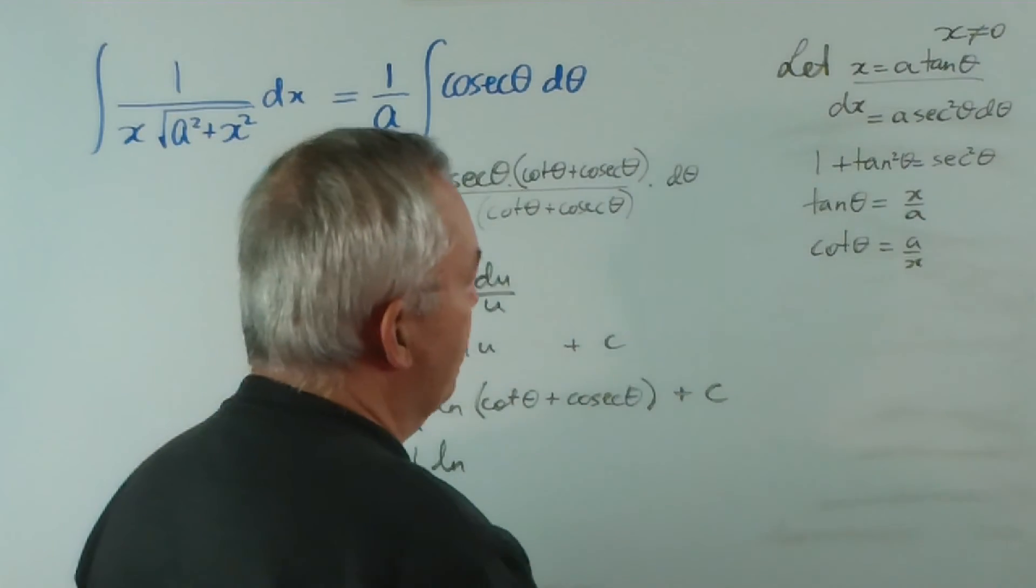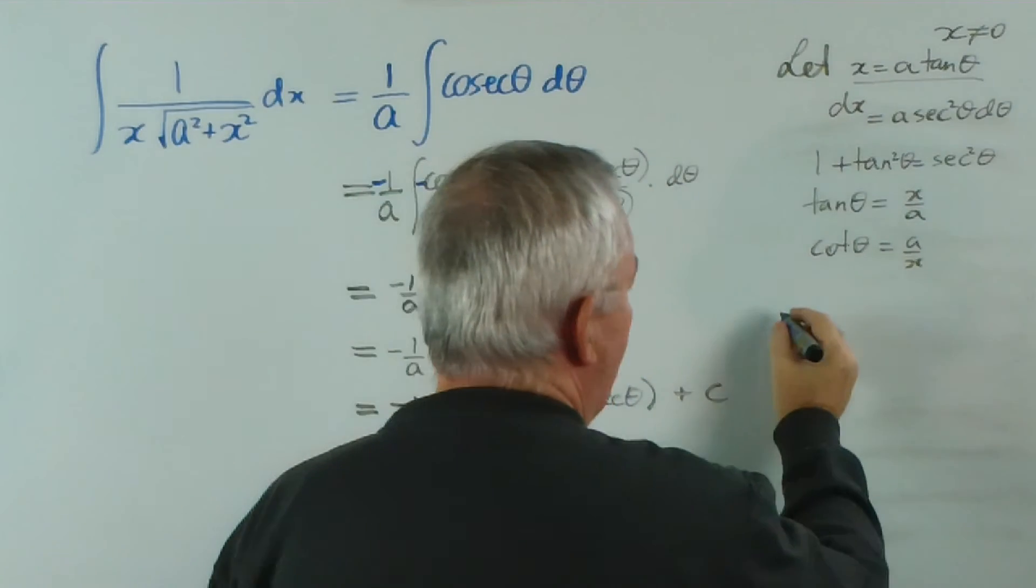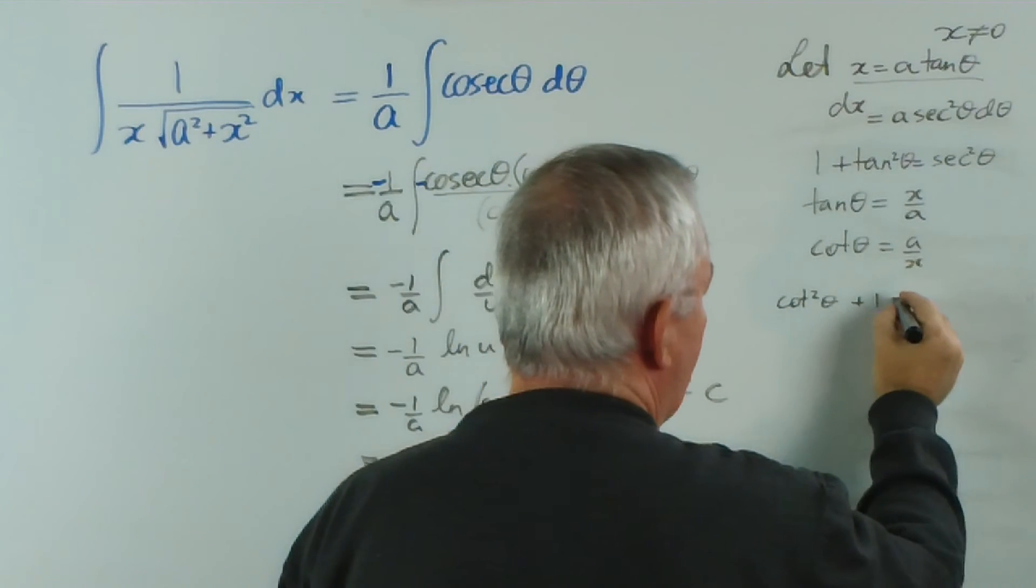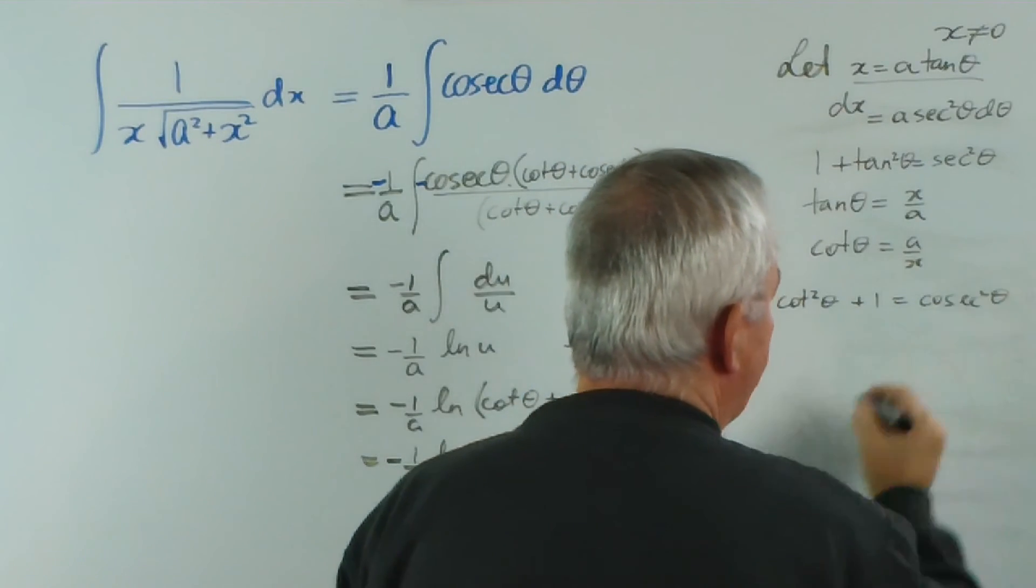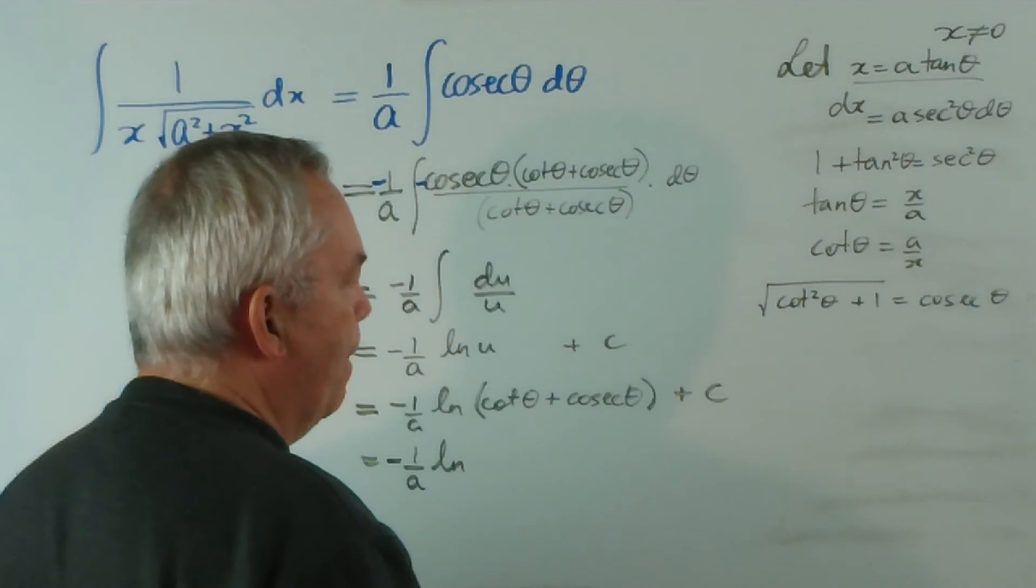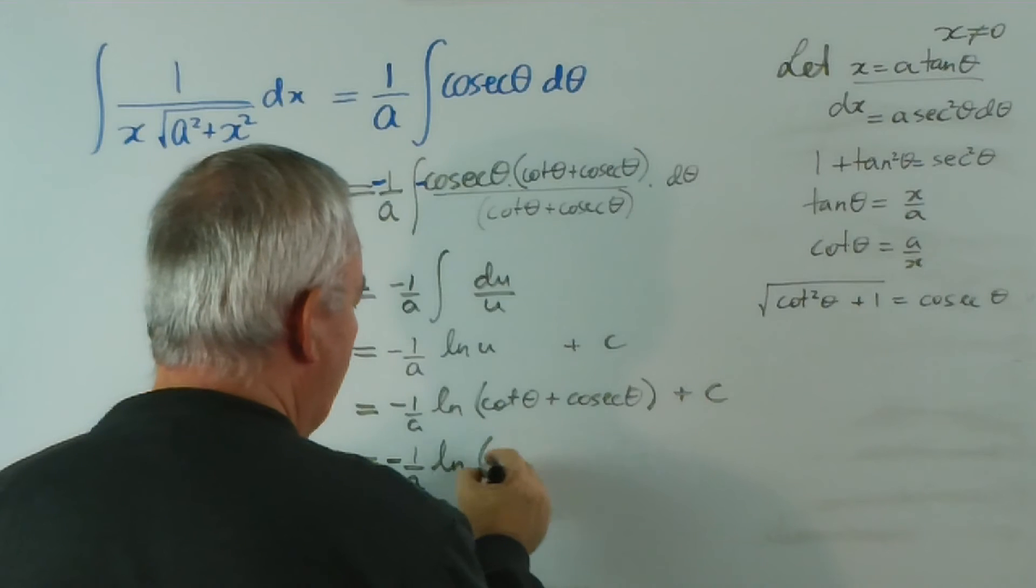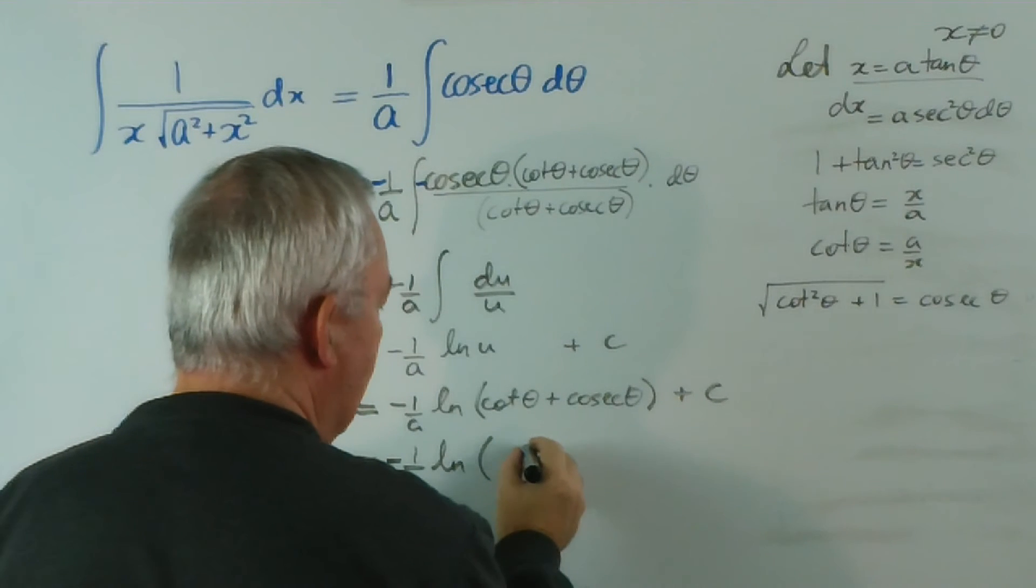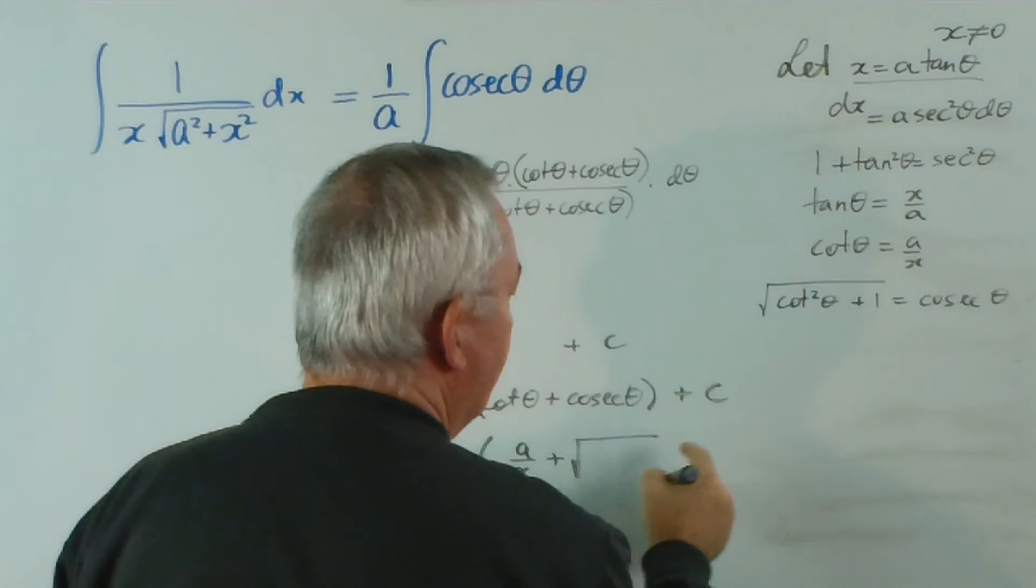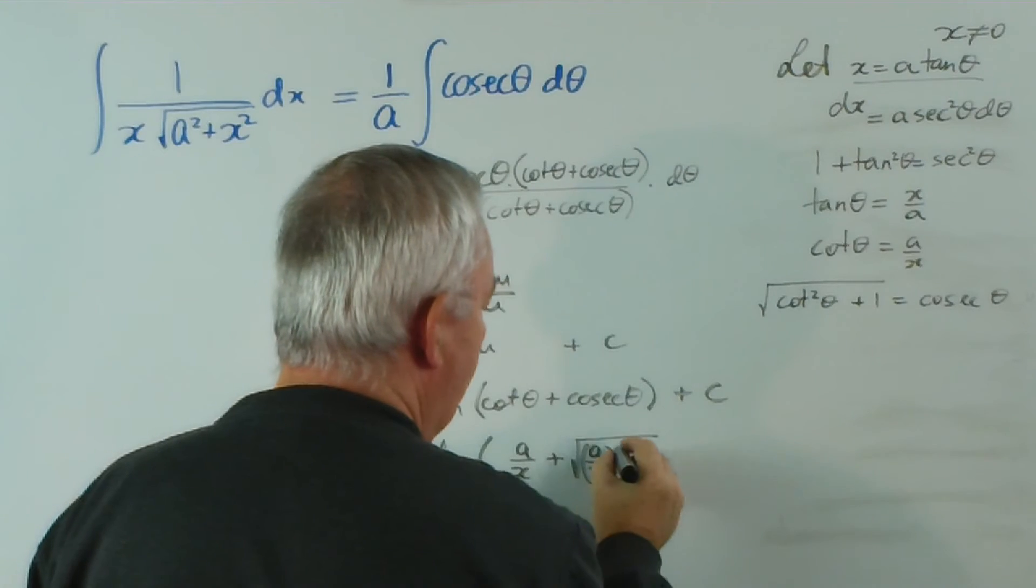What about cosec theta? I think we're going to have to work with an identity. Now, we know that cot squared theta plus 1 is cosec squared theta. So cosec theta will be the square root of that. And since we know what cot theta will be, we've got back to our x's. So let's have a look. We have the logarithm of cot theta is a on x plus cosec theta is going to be the square root of a on x squared plus 1.